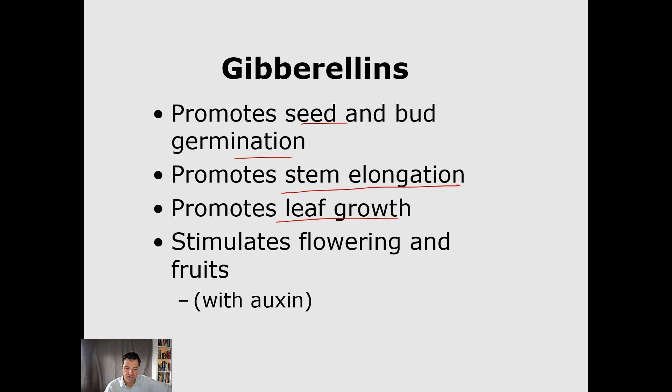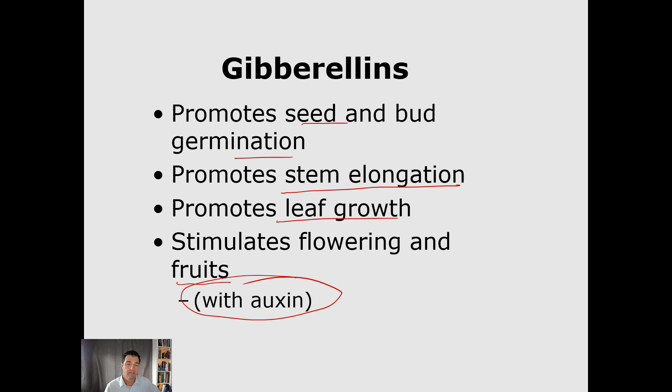Next, gibberellins promote seed and bud germination, stem elongation, leaf growth, and stimulate flowering and fruiting — all in conjunction with auxin. In industries like grape growing, gibberellins allow longer stems so more grapes can grow. Long-stem roses also take advantage of gibberellins to produce longer stems than you'd otherwise get.